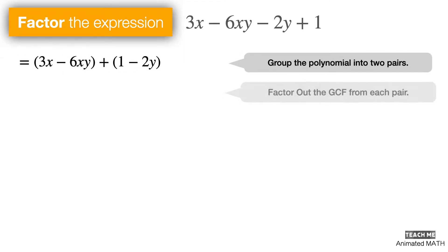The next step is to factor out the GCF from the two pairs. For the first pair, the GCF is 3x. And for the second pair, make sure that you don't miss this one because its GCF is the integer 1.